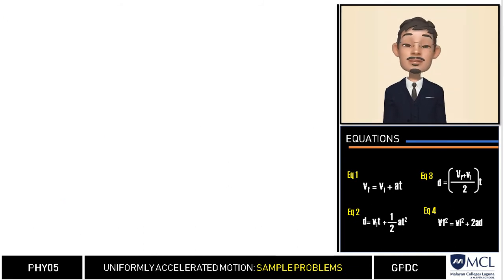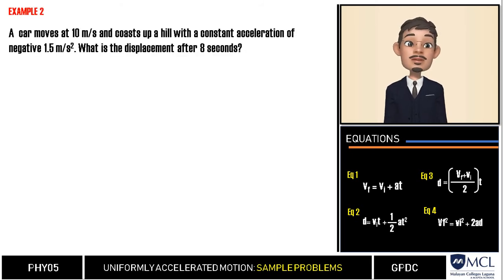If that is clear, let us have another example. A car moves at 10 meters per second and goes up a hill with a constant acceleration of negative 1.5 meters per second squared. What is the displacement after 8 seconds?